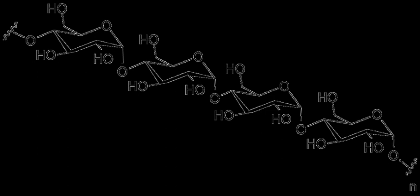Starch is a glucose polymer in which glucopyranose units are bonded by alpha linkages. It is made up of a mixture of amylose and amylopectin. Amylose consists of a linear chain of several hundred glucose molecules and amylopectin is a branched molecule made of several thousand glucose units.